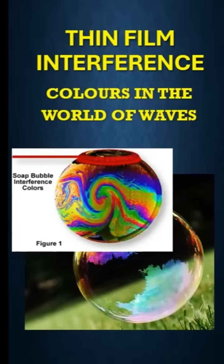Thin film is like a super thin layer of material, often as thin as a few wavelengths of visible light. Examples include soap bubbles, oil slicks, and anti-reflective coatings on glasses.